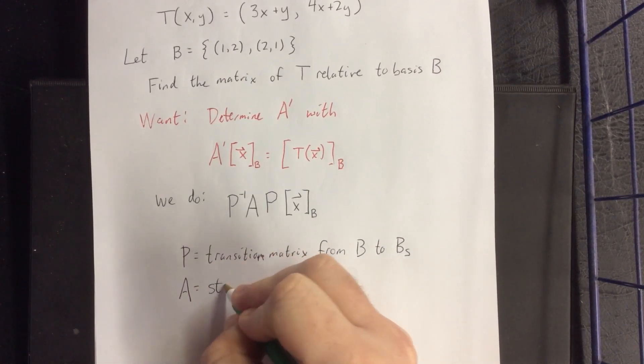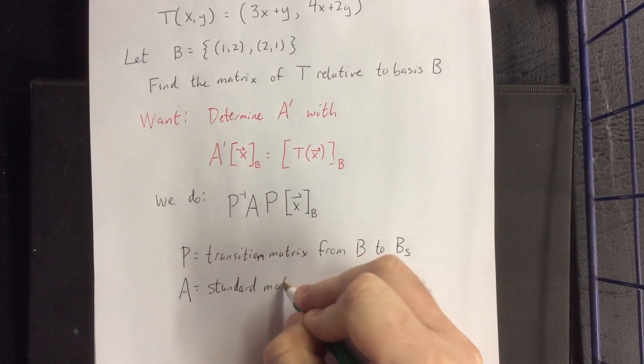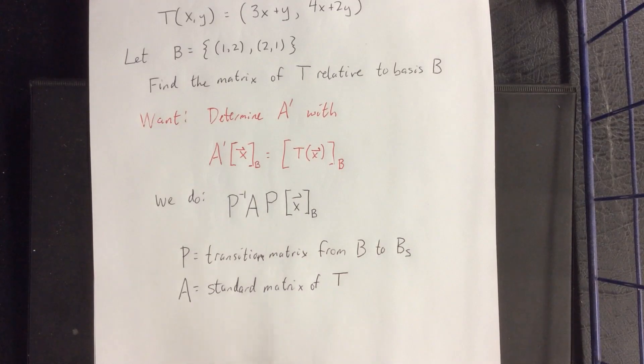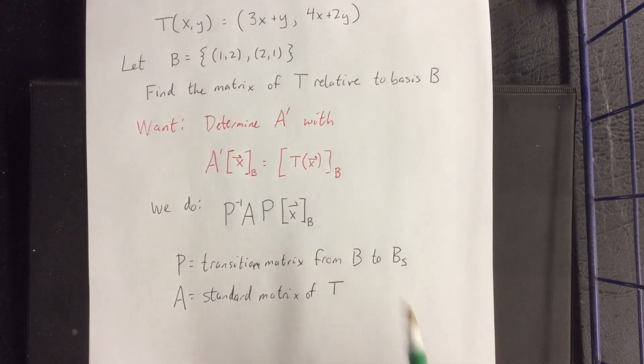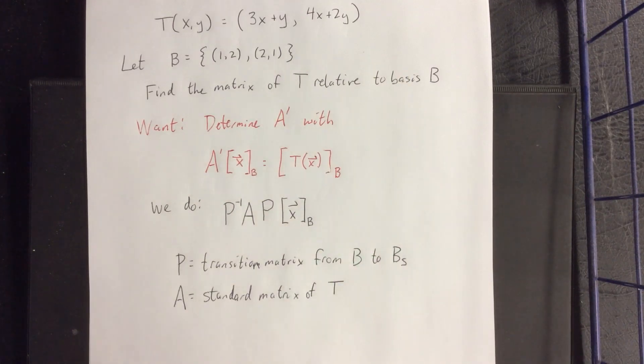A is going to be the standard matrix of transformation T. So that's going to go back to the definition of what our transformation does to a pre-image.